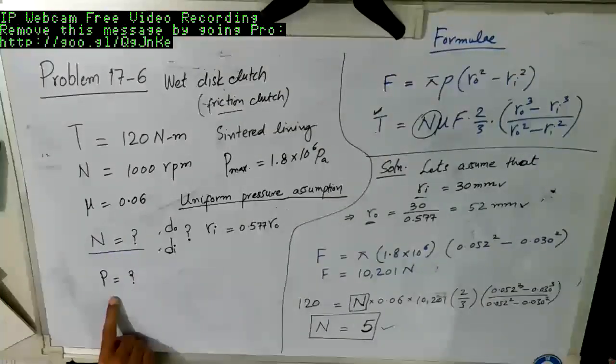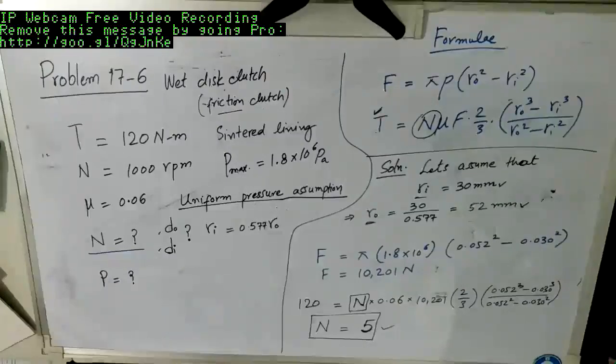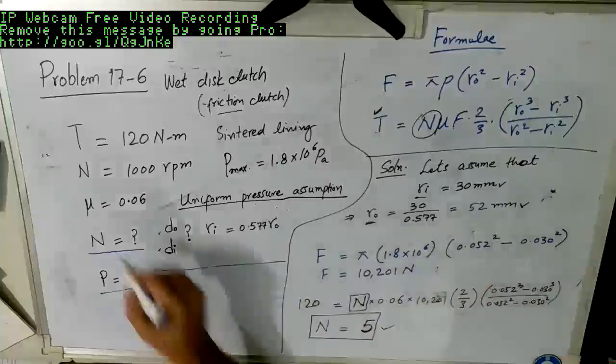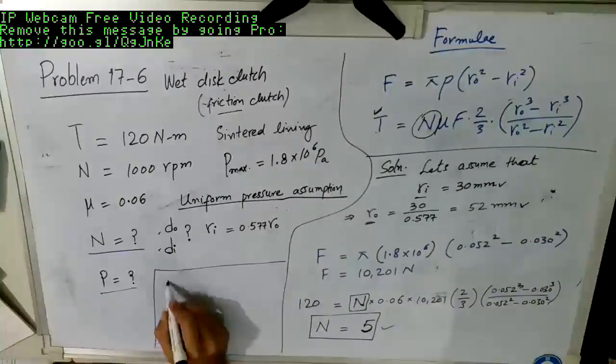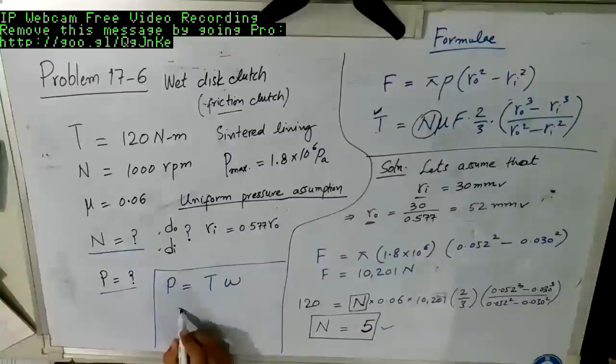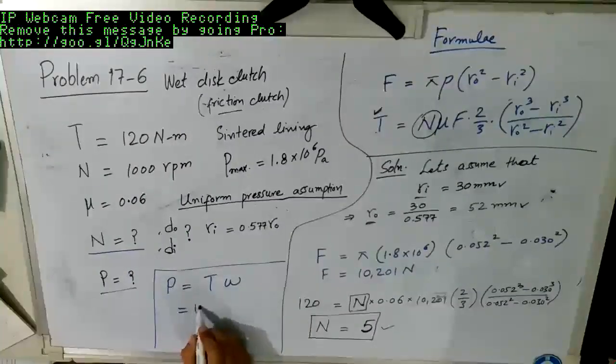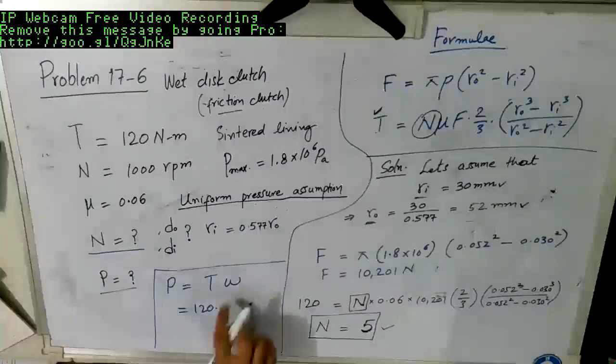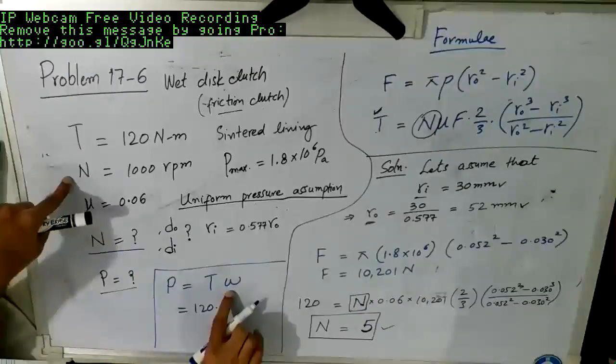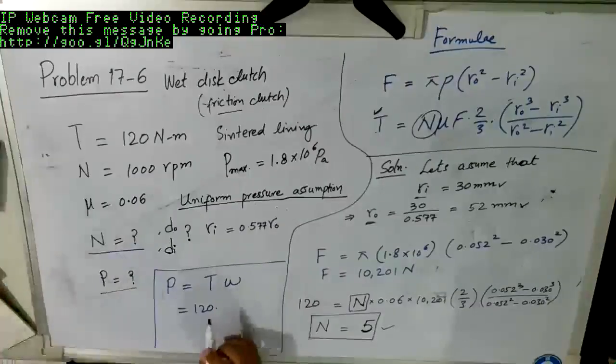And finally, we are also required to find out the power. For power, actually we don't need any of this. We only need power is equal to T into omega. So T is 120 Newton meter as given. Omega or angular velocity can be found out by the rpms given.